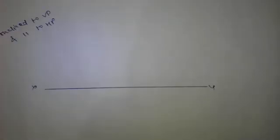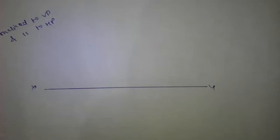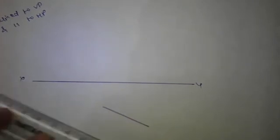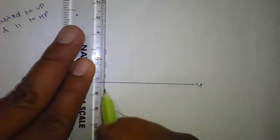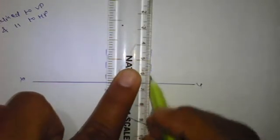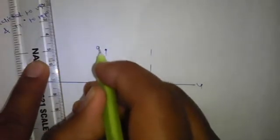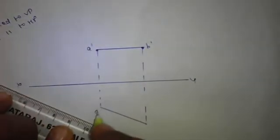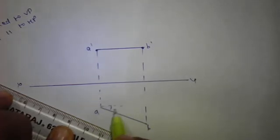Now the case of inclined to VP and parallel to HP: we will see the true shape in the top view, since it is inclined to VP the true length will appear there, so we draw the top view first. It is inclined at some angle to VP, so we draw it inclined, and then we draw the projectors to show the front view. These are the projectors drawn, and this is A-dash B-dash the front view, while the top view is AB inclined at angle theta to the VP.